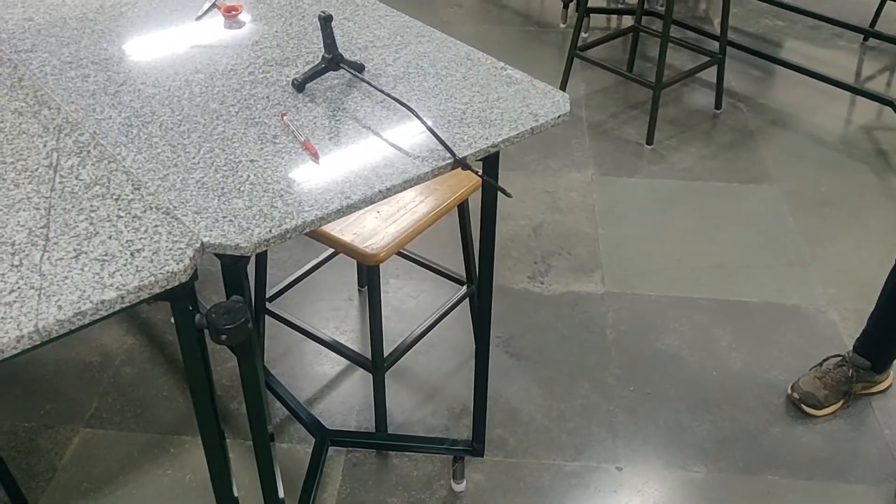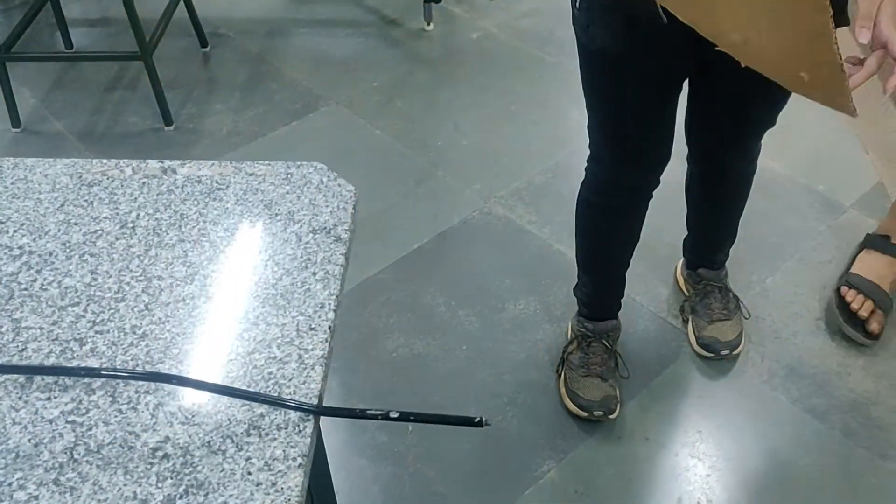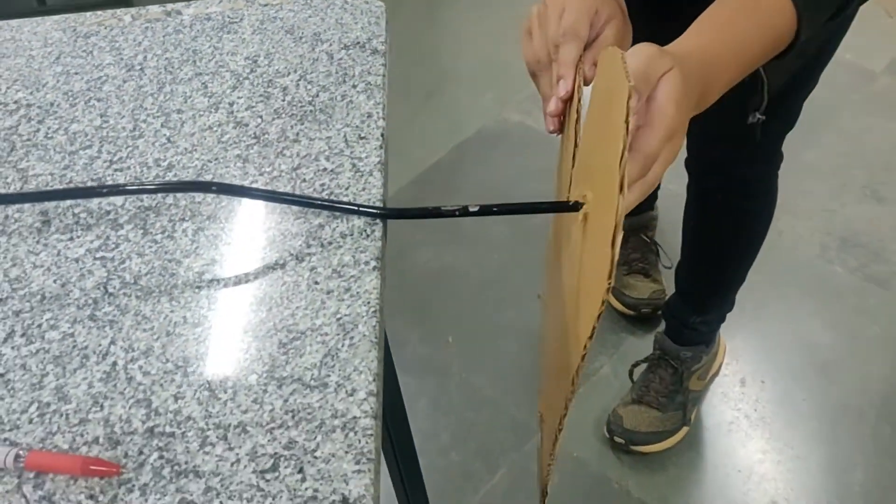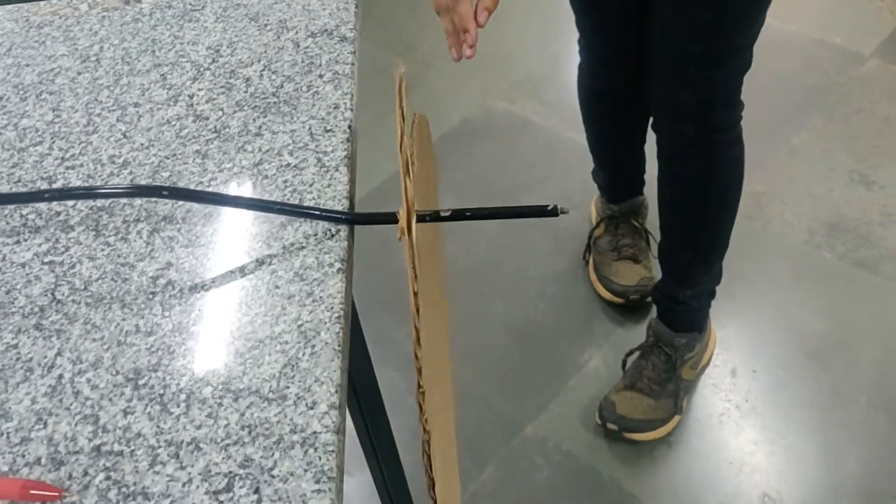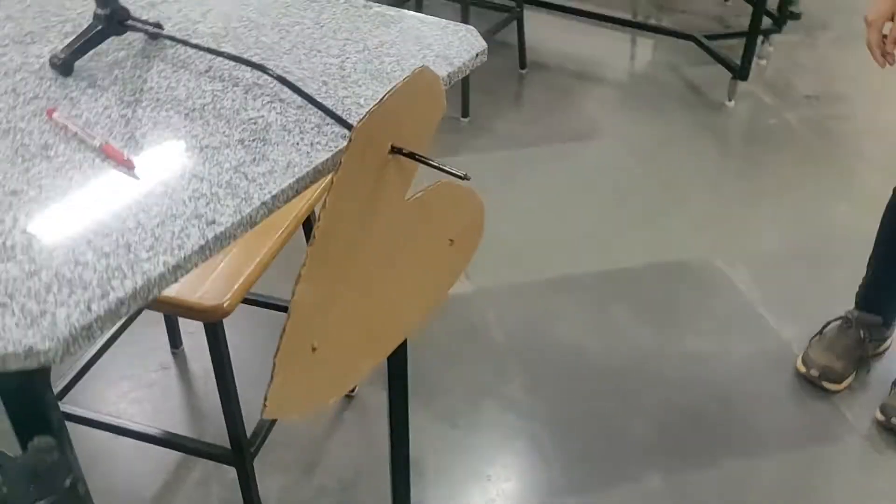So to start this activity, we hang that cardboard piece into this stick. And we put up a plumb line.